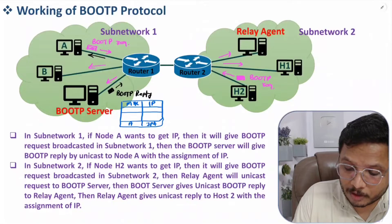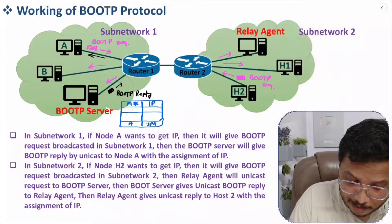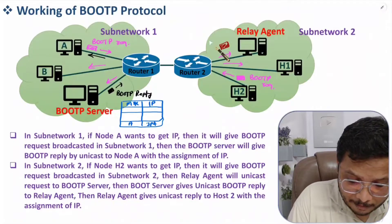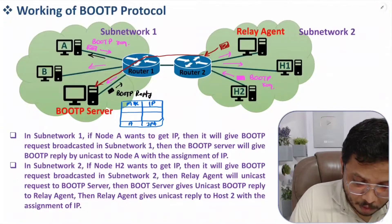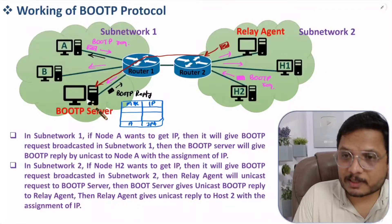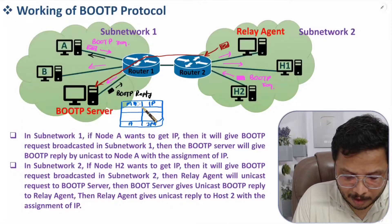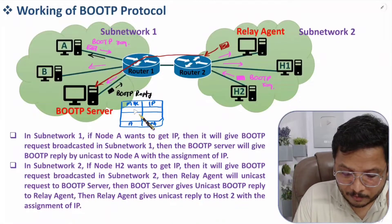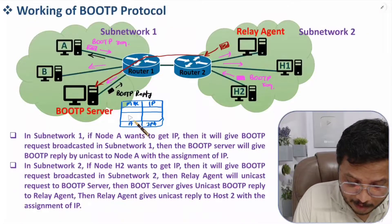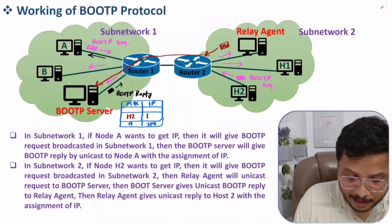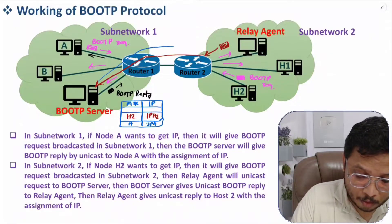The relay agent has the IP and MAC address of the BOOTP server, so it forwards a unicast frame with Host 2's request to the BOOTP server. The BOOTP server then knows that Host 2 in sub-network two wants an IP address. The BOOTP server adds Host 2's MAC address to its table, assigns an IP to it, and gives a reply back to the relay agent.